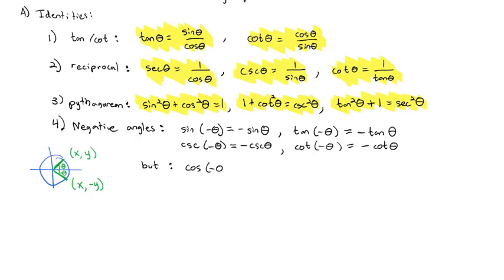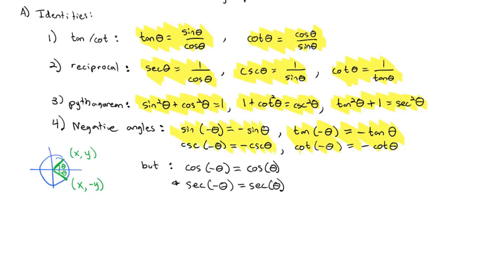But cosine of negative theta is different. Since cosine is the x-coordinate, moving up or down doesn't change x, so cosine of a negative angle equals cosine of the positive angle. The reciprocal does the same: secant of negative theta equals secant of theta. With cosine and secant, the negative disappears inside. You can just draw a unit circle picture to derive all six of these without memorizing them.